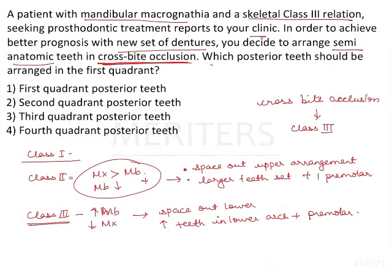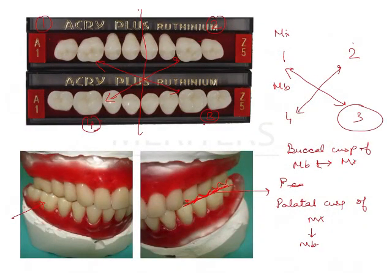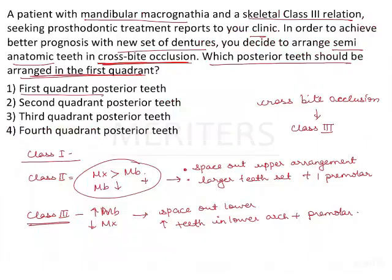Now the question is: which posterior teeth set should be arranged in the first quadrant? In the first quadrant, you will arrange third quadrant posterior teeth. In the second quadrant, you will arrange fourth quadrant posterior teeth. The correct answer is: third quadrant posterior teeth should be arranged in the first quadrant for crossbite occlusion in a skeletal class 3 completely edentulous patient.